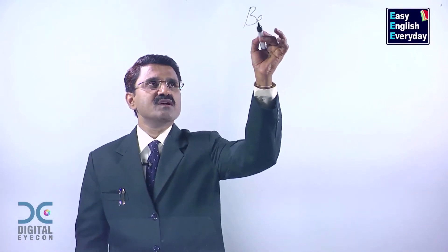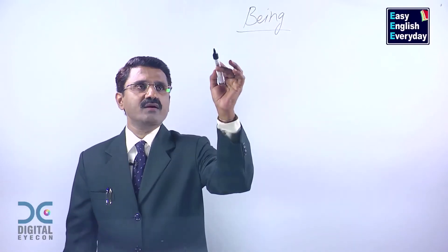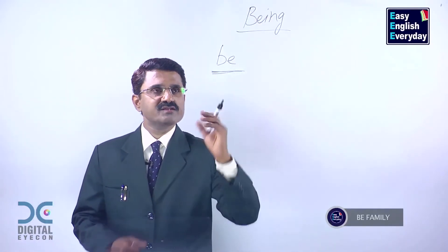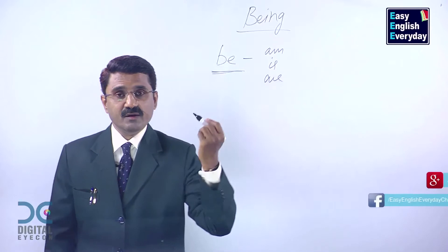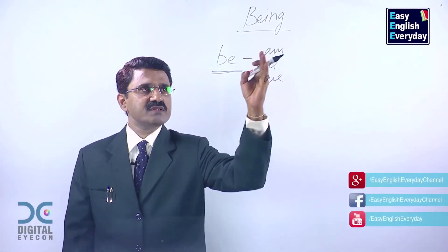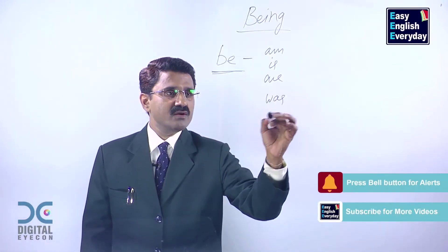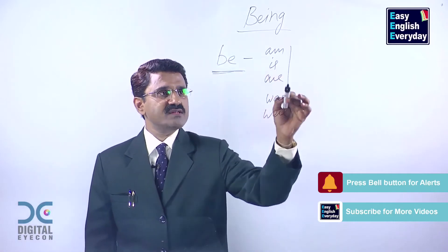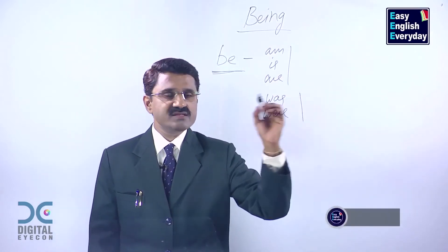This is one of the most troublesome words for non-native speakers of the English language. 'Being' comes from a family called the Be family. This is a very powerful family in English language and this family consists of eight members: am, is, are. In our previous videos we have discussed the uses of am, is, are. We also have was and were. Now am, is, are indicate present tense, and was and were are past.